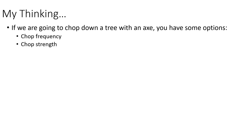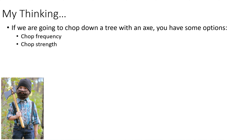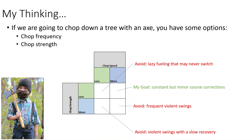My thinking on how we're going to do this: if I'm a lumberjack who needs to cut down a tree, I have to decide how fast to chop and how hard to hit. For our fueling problem, we want to make frequent corrections but not be very aggressive about it — constant but minor course corrections. We don't want to be too violent in any way. How you eat an elephant is one bite at a time — take a bunch of small bites, but always be eating that elephant.